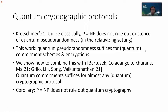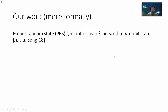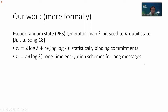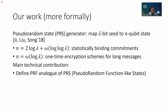Furthermore, we show how to combine this with prior work constructing multi-party secure computation from commitment to also get MPC from quantum commitment. So a corollary is that even if P equals NP, this does not rule out quantum cryptography for MPC. The pseudorandomness we consider is the object introduced by Ji, Liu, and Song in 2018, called pseudorandom state generators — or PRS. It's like a PRG, but instead of mapping a seed to a longer classical string, it maps it to an n-qubit quantum state. We show that if the output length is a little bit more than 2 log lambda, we can get statistically binding commitments, and if the output length is super-logarithmic, this suffices for constructing one-time encryption for arbitrarily long polynomial-length messages.